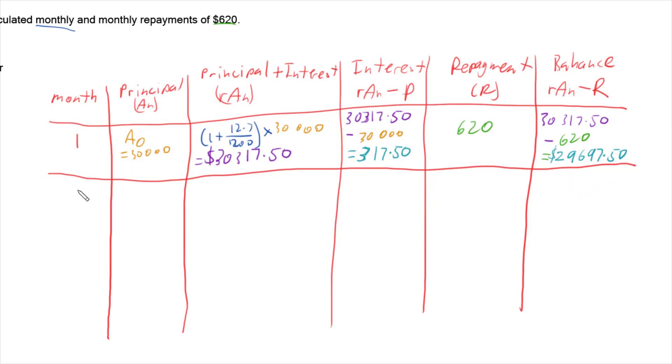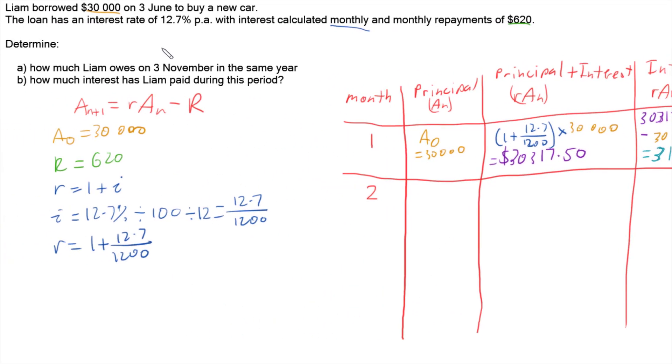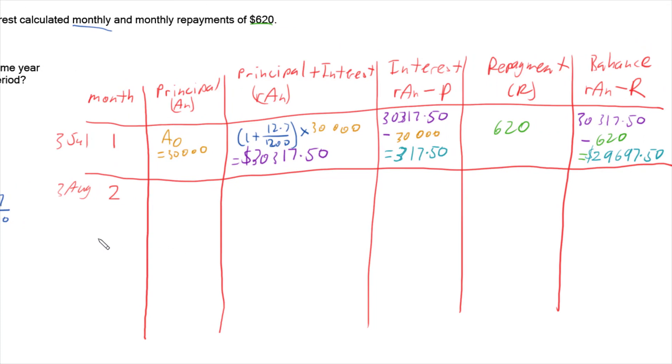So then we can do our second month and we should keep track of which months these are because we started on the 3rd of June. So the end of the first month is from the 3rd of June through to the 3rd of July. And then from there, we get to the 3rd of August. And so that way we can work out how many months we have to do.